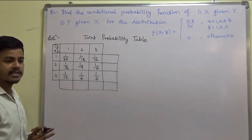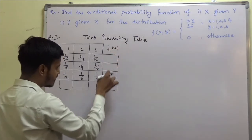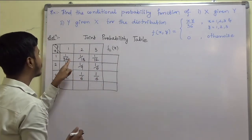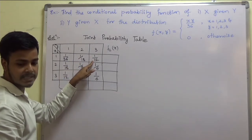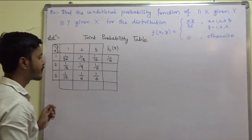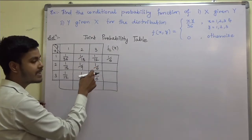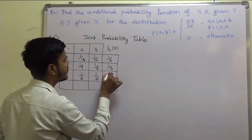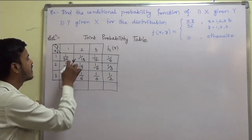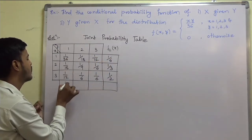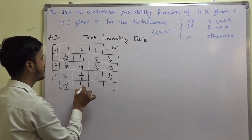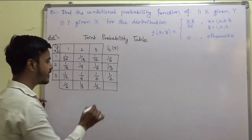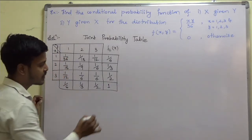Now we sum up row-wise and column-wise. Row sums: 1/36 + 1/18 + 1/12 = 1/6 for X=1; 1/18 + 1/9 + 1/6 = 1/3 for X=2; 1/12 + 1/6 + 1/4 = 1/2 for X=3. Column sums are similarly 1/6, 1/3, and 1/2. The grand total is 1, confirming the table is correct.